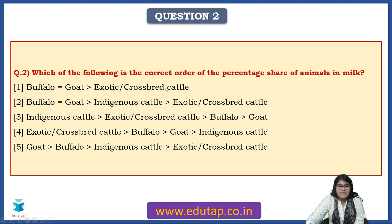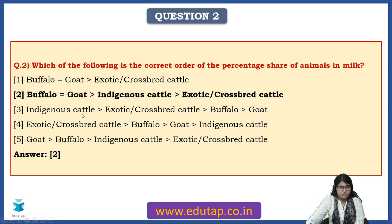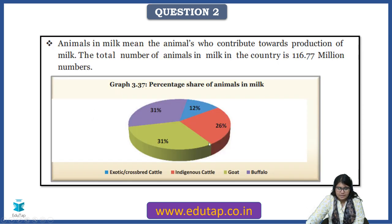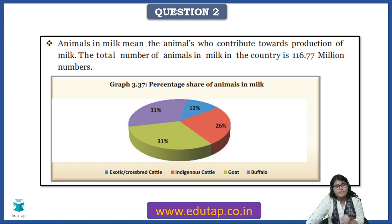Second question: which is the correct order of the percentage share of animals in milk? The answer: buffalo and goat stand equal at the top, followed by indigenous cattle, and then exotic or crossbred cattle. You can see the pie chart clearly showing that goat and buffalo have the same percentage share of animals in milk. These kinds of questions can be expected — it will just take five minutes to memorize them.